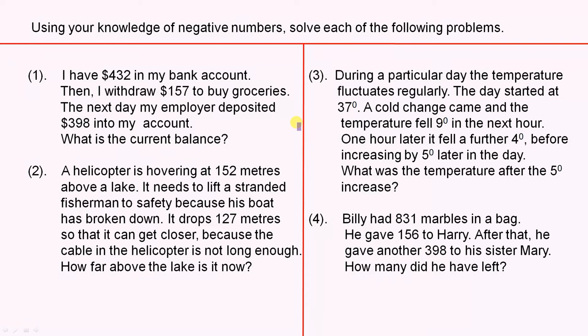Number one: I have $432 in my bank account. Then I withdraw $157 to buy groceries. The next day my employer deposited $398 into my account. What is the current balance? This is an example where negative numbers come into play, and we have to perform a calculation to solve this problem, highlighting the importance of negative numbers.